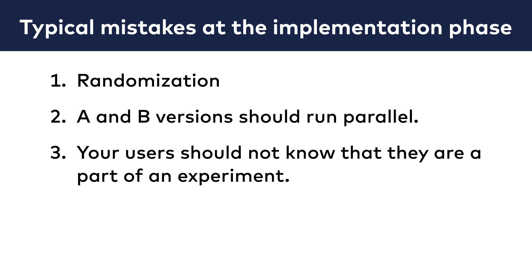Number 3: Your users should not know that they are a part of an experiment. So don't tell them in an email or in a pop-up. Also, don't tell them that they can opt out of version B to go back to version A. These things could bias their behavior. This should be obvious, but I've seen this mistake made too many times.